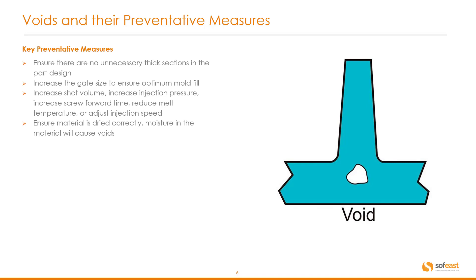Some key preventative measures to avoid voids: ensure there are no unnecessary thick sections in the part design; increase the gate size to ensure optimum mold fill; increase shot volume; increase injection pressure; increase screw forward time; reduce melt temperature; or adjust injection speed. Ensure material is dried correctly, as moisture in the material will cause voids.